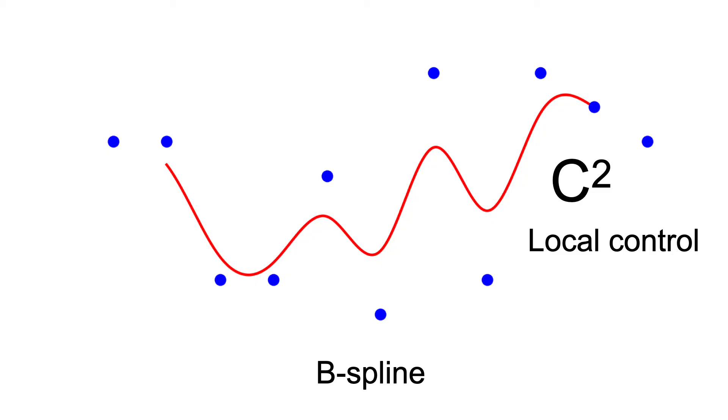Today we'll introduce B splines, which are both C2 and have local control, but don't interpolate most control points.